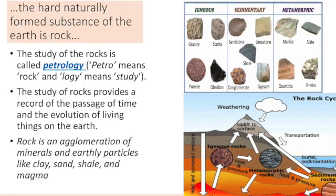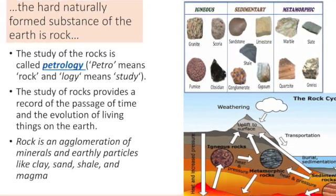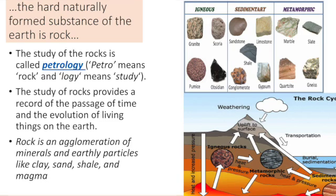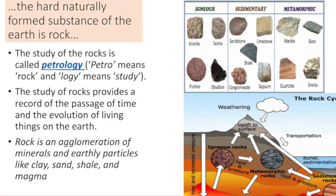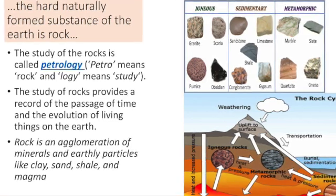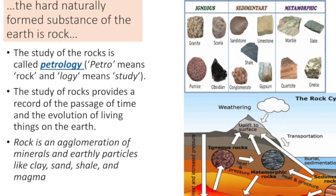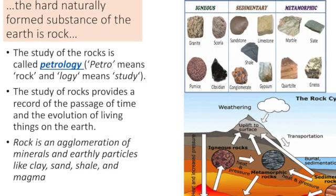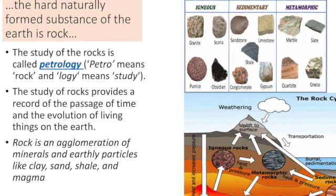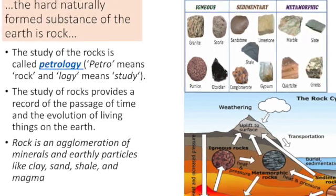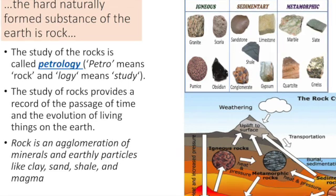Sedimentary rocks are formed from pre-existing rocks or pieces of once-living organisms. They are formed from deposits that accumulate on the earth's surface. Sedimentary rocks have often distinctive layers or bedding. Common sedimentary rocks include sandstone, limestone and shale.